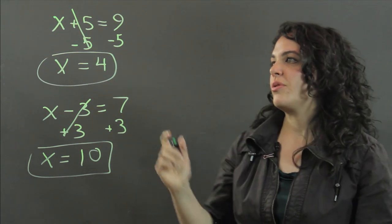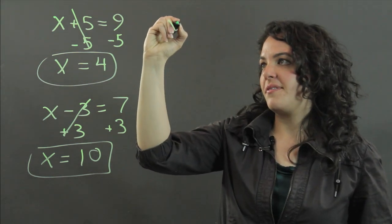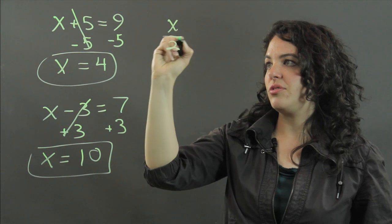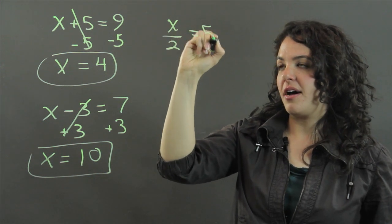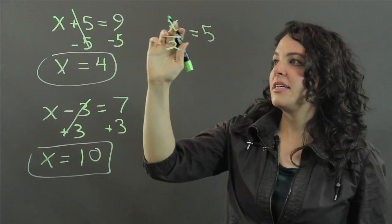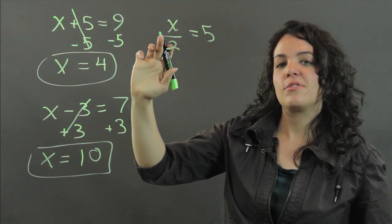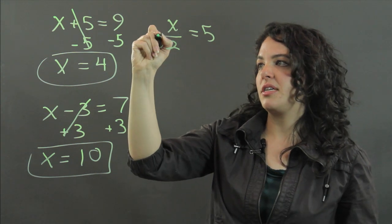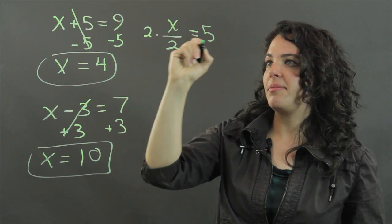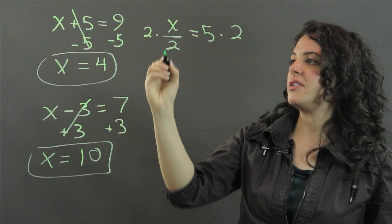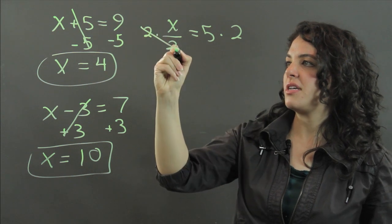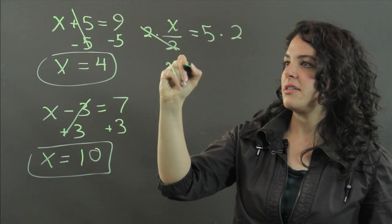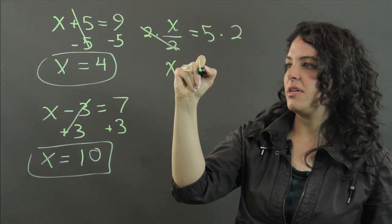And I'm going to give you two more quick ones. If I have x divided by 2 equals 5, x is being divided by 2. The inverse of division is multiplication. So I'm going to multiply both sides by 2. 2 over 2 crosses out, and I have x equals 5 times 2 is 10.